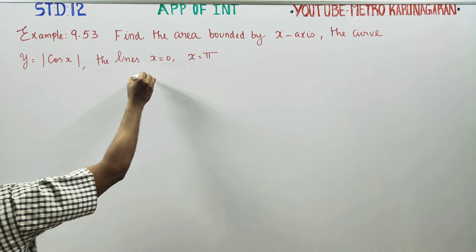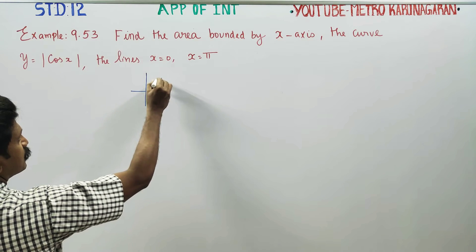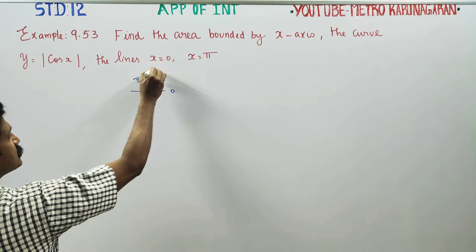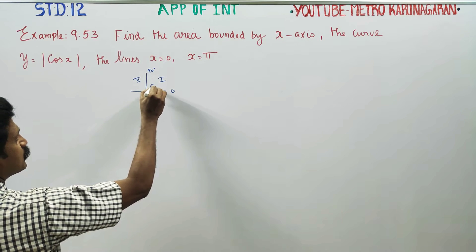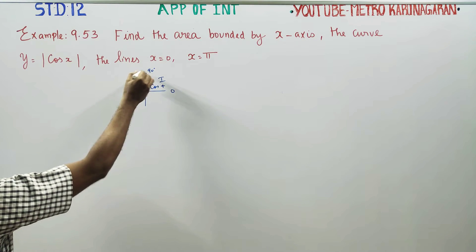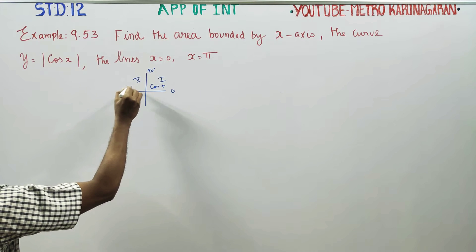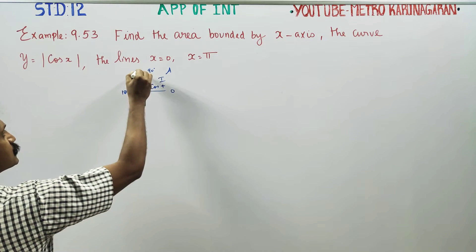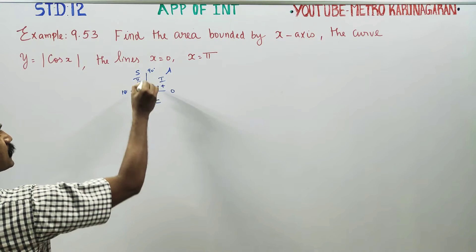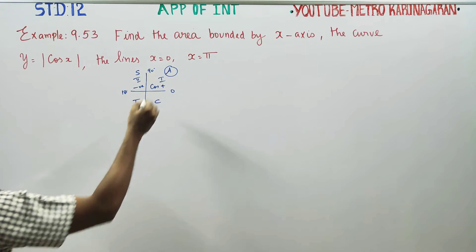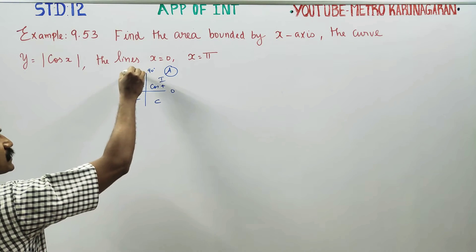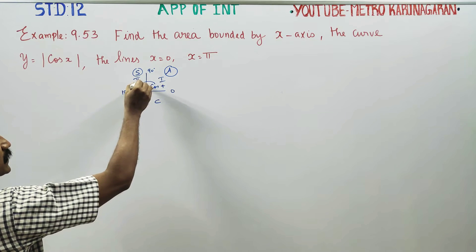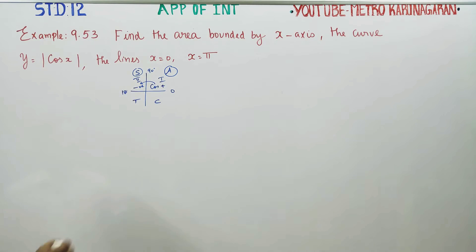Before entering into this sum — in the first quadrant (0 to 90 degrees), cos is positive. In the second quadrant (90 to 180 degrees), cos is negative. All trigonometric ratios are positive in the first quadrant; cos is positive there and negative in the second quadrant.